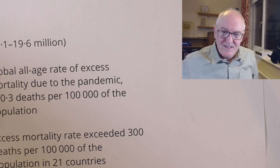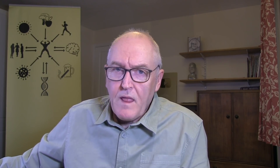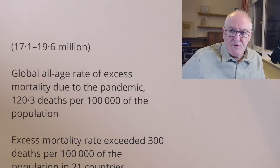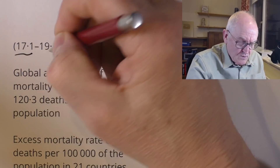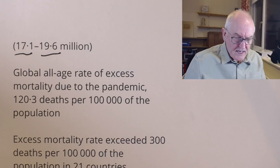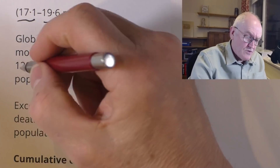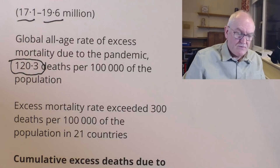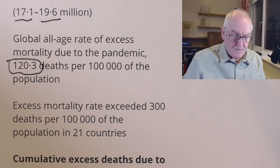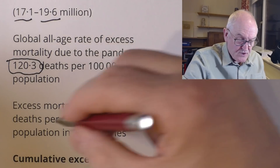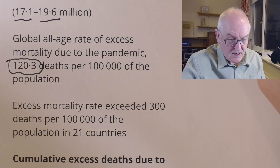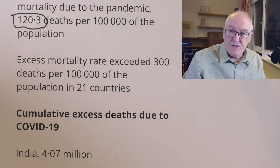The modeling at Washington State University does seem to be better than some institutions in the UK, where modeling has been, well, suboptimal at times. But the Institute for Health Metrics and Evaluation does seem pretty good. Excess mortality falls in the range of 17.1 to 19.6 million. The global all-age rate of excess mortality due to the pandemic is 120.3 deaths per 100,000 of the population. The excess mortality rate exceeded 300 deaths per 100,000 in 21 countries.